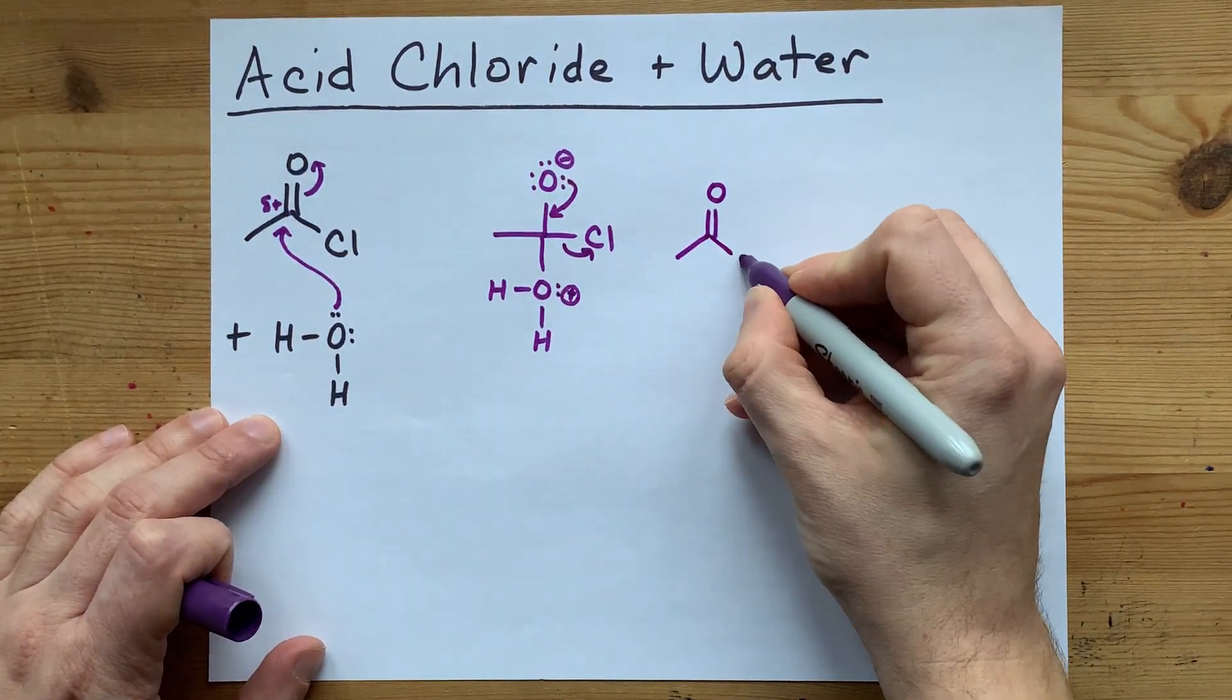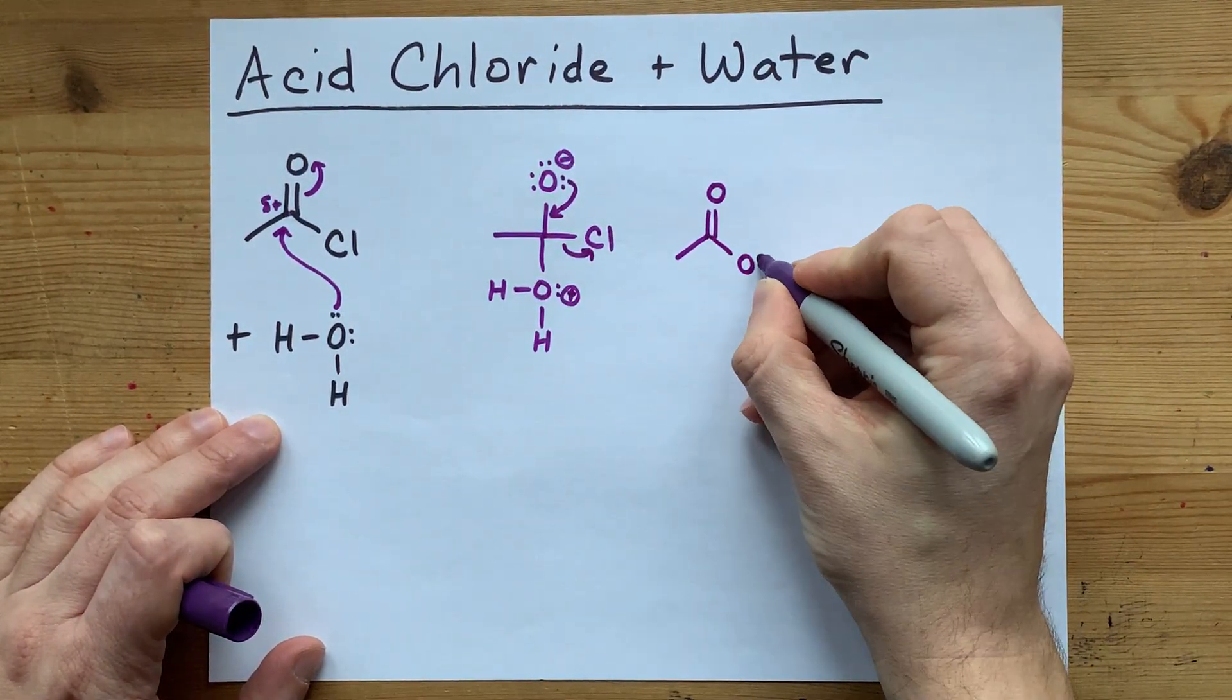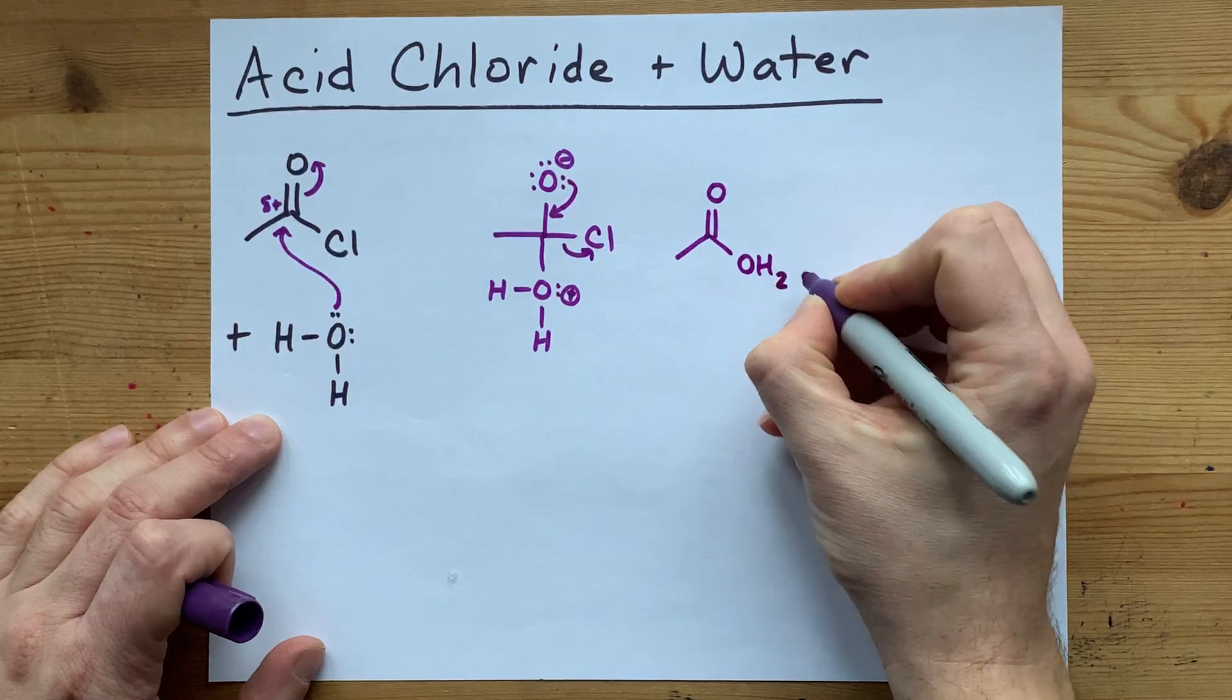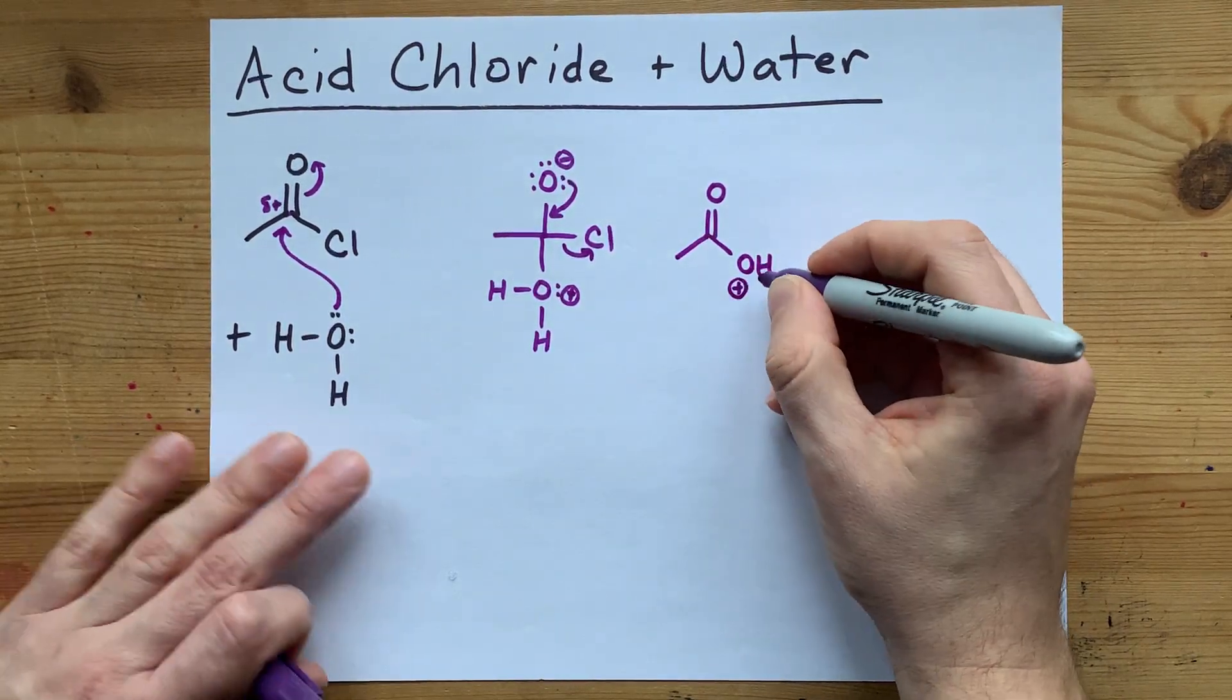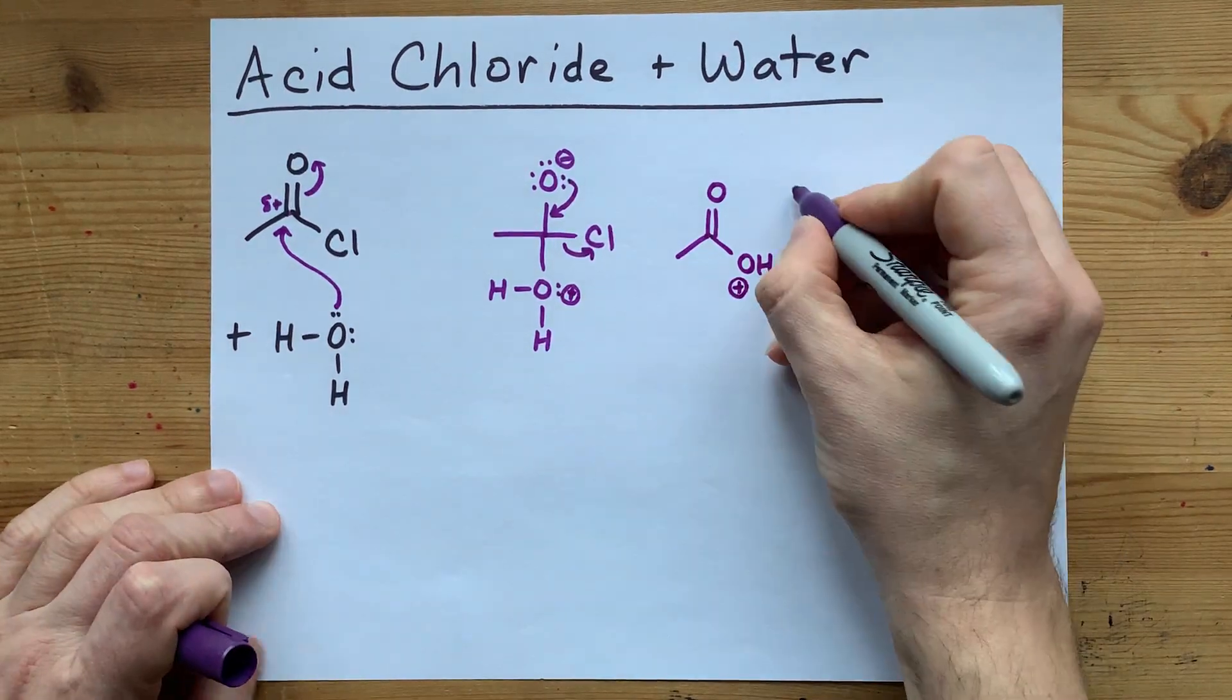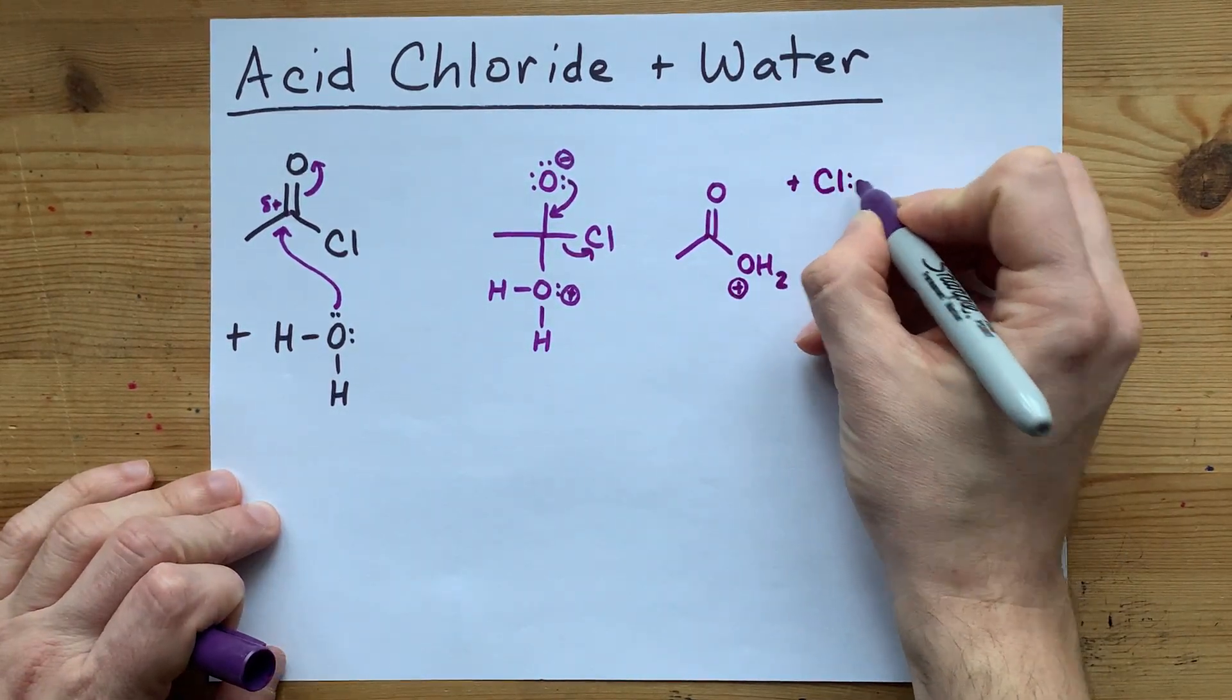You've got the O from the water, and you've still got two H's attached to it. That's a positive formal charge on the oxygen, and you've released a chloride ion.